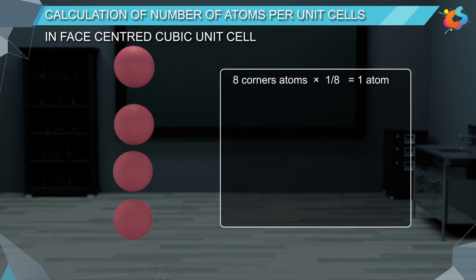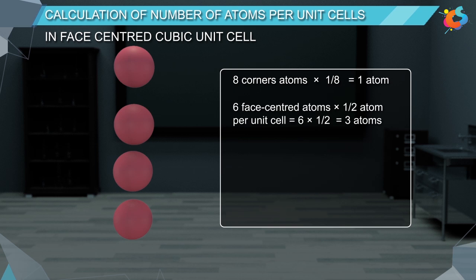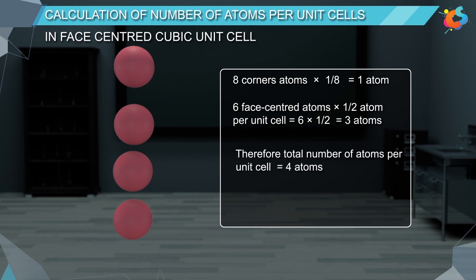Eight corner atoms × 1/8 = 1 atom. Six face-centred atoms × 1/2 = 6 × 1/2 = 3 atoms. Therefore, the total number of atoms per unit cell is equal to 4 atoms. The face-centred cubic unit cell contains 4 atoms of an element.